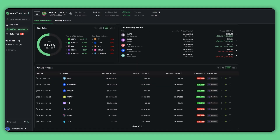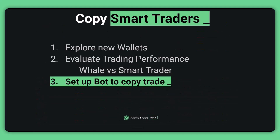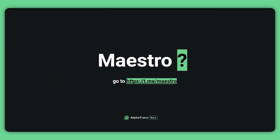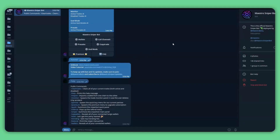We've taught you how to find wallets using Alpha Trace in the first video, for example checking the consistent win rate and their profit and loss on each token. In this episode, we will show you how to set up a trading bot to copy trade from the wallets we've been looking for. In this video, we'll be using Maestro Bot to demonstrate how to set up a bot for copy trading. Maestro Bot is a Telegram trading bot for copy trading on Ethereum, but you can also use other bots too. To use Maestro Bot you will also need Telegram, so sign up first if you haven't, and check out the link to go to the Maestro Sniper Bot channel.